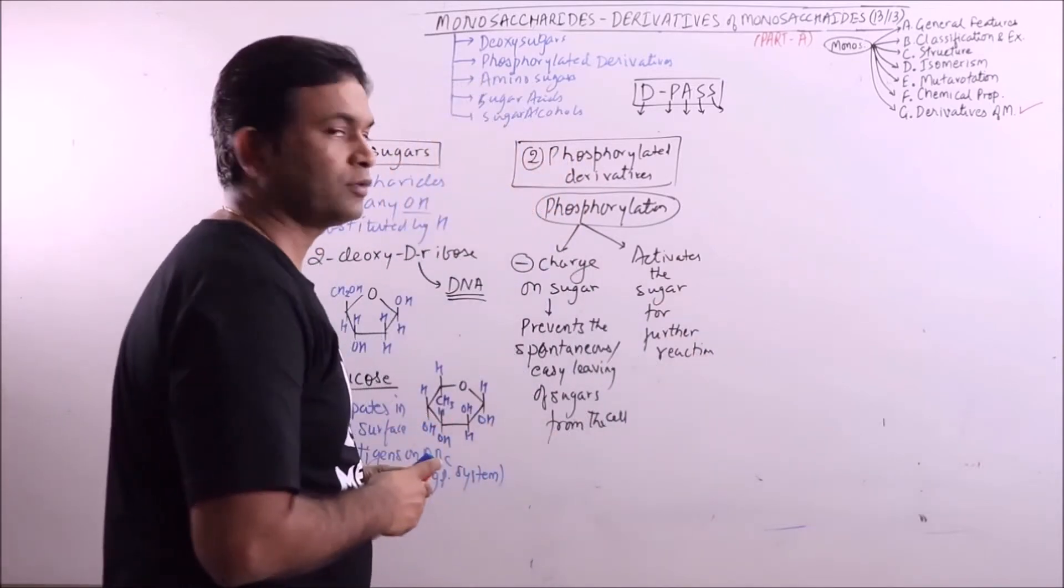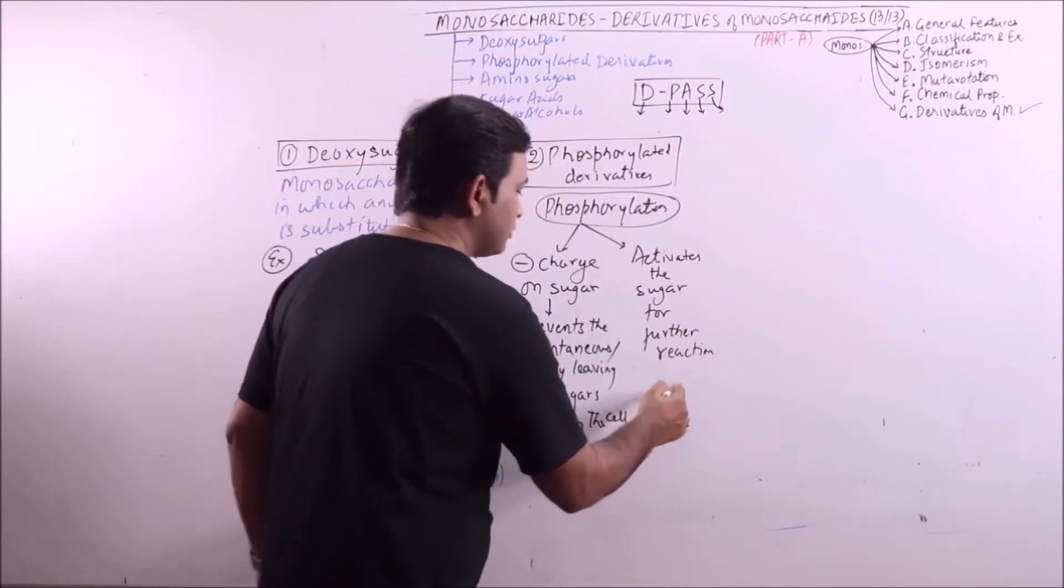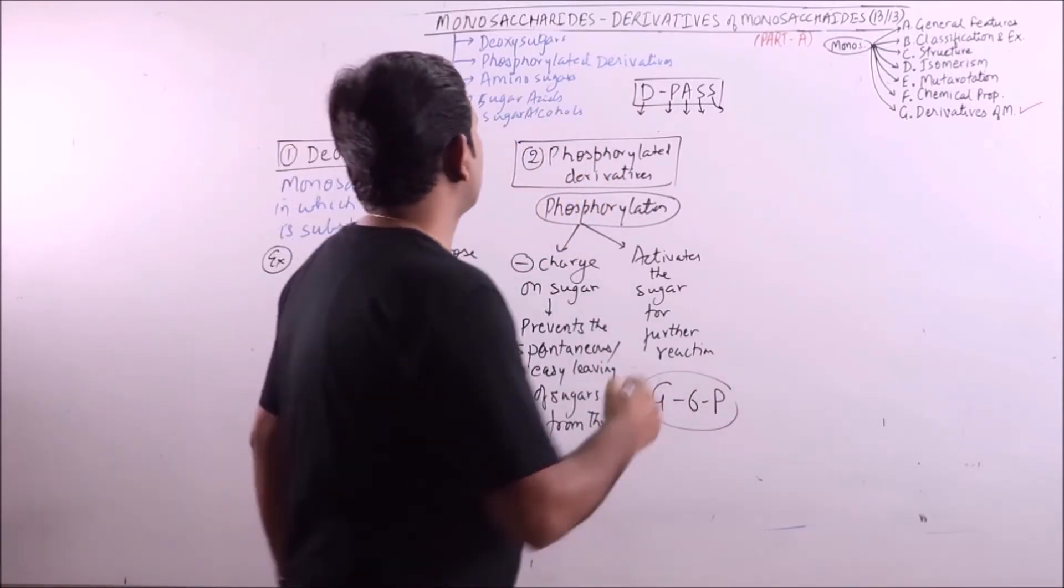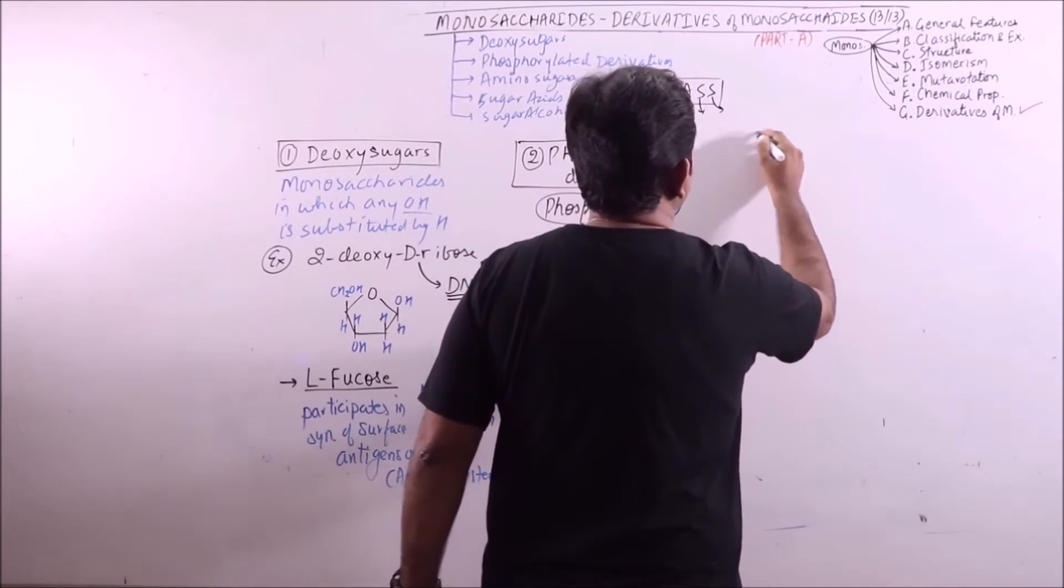So these are phosphorylated derivatives, for example, glucose 6-phosphate. Now the third one, that is amino sugars.